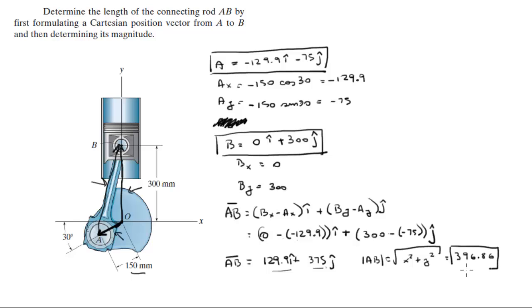You're going to get that the magnitude is going to be equal to 396.86 millimeters. And that magnitude is the distance between A to B, final answer. And here you have the two vectors for the position vectors for each of the points.